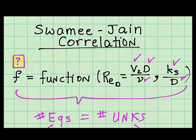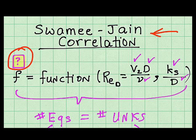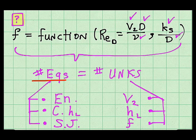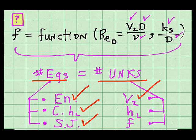To find the friction factor, I apply the Swamy-Jane correlation for turbulent flow. Term-by-term analysis shows that all needed variables are known, so I can find the friction factor. The number of equations exactly equals the number of unknowns. The three equations are the energy equation, the combined head loss equation, and the Swamy-Jane correlation. The three unknowns are the exit velocity V2, the total head loss in the system, and the friction factor f.